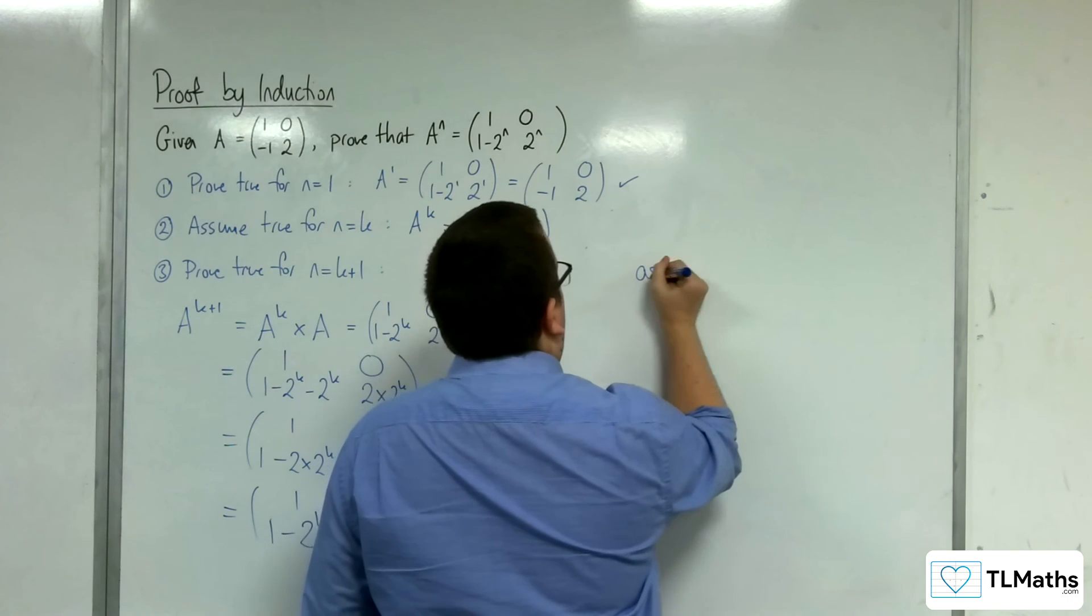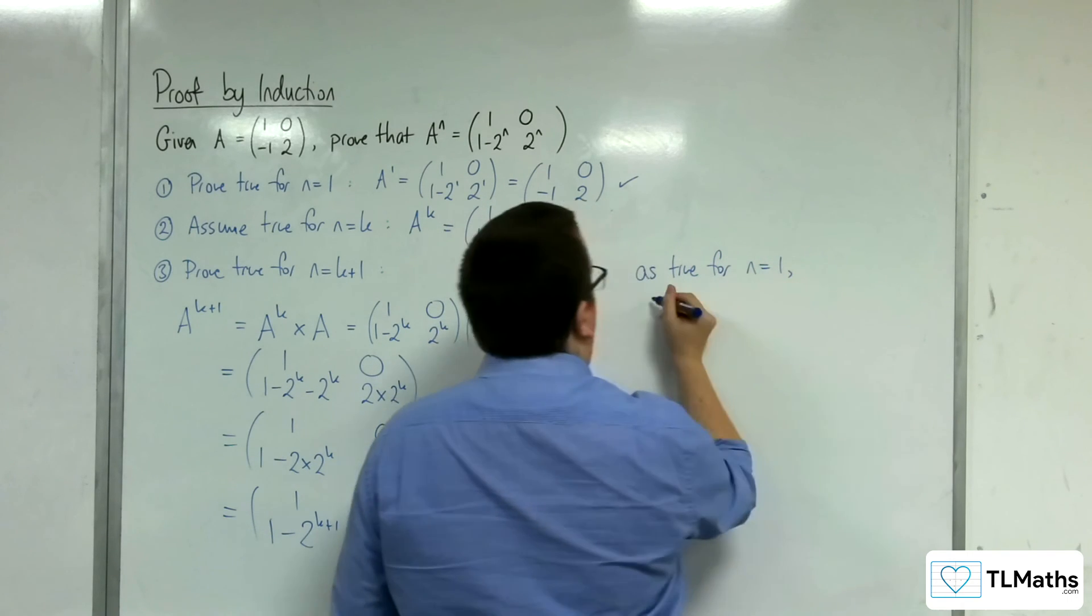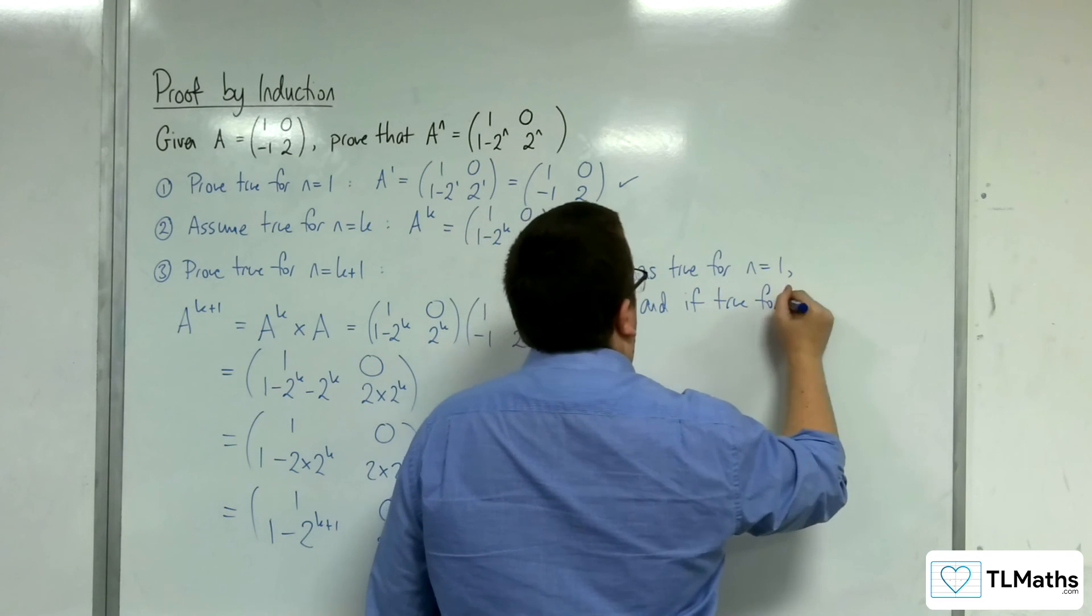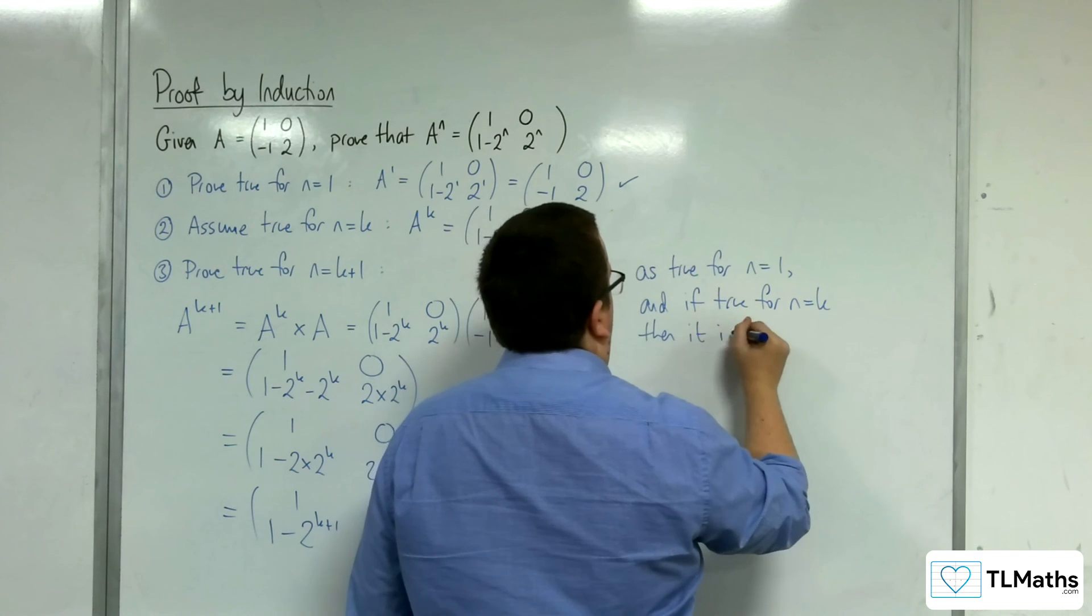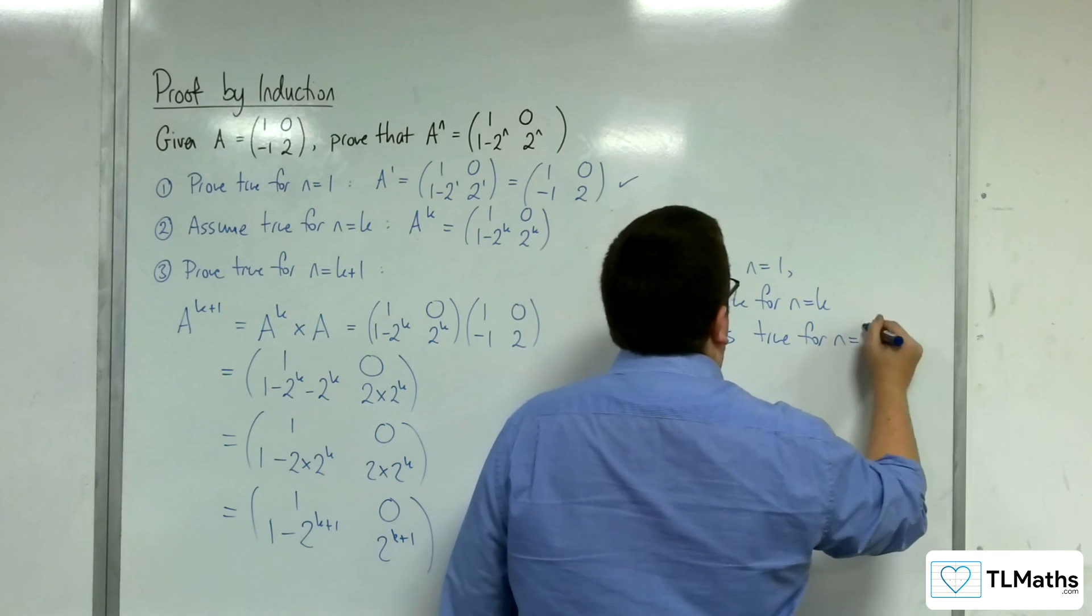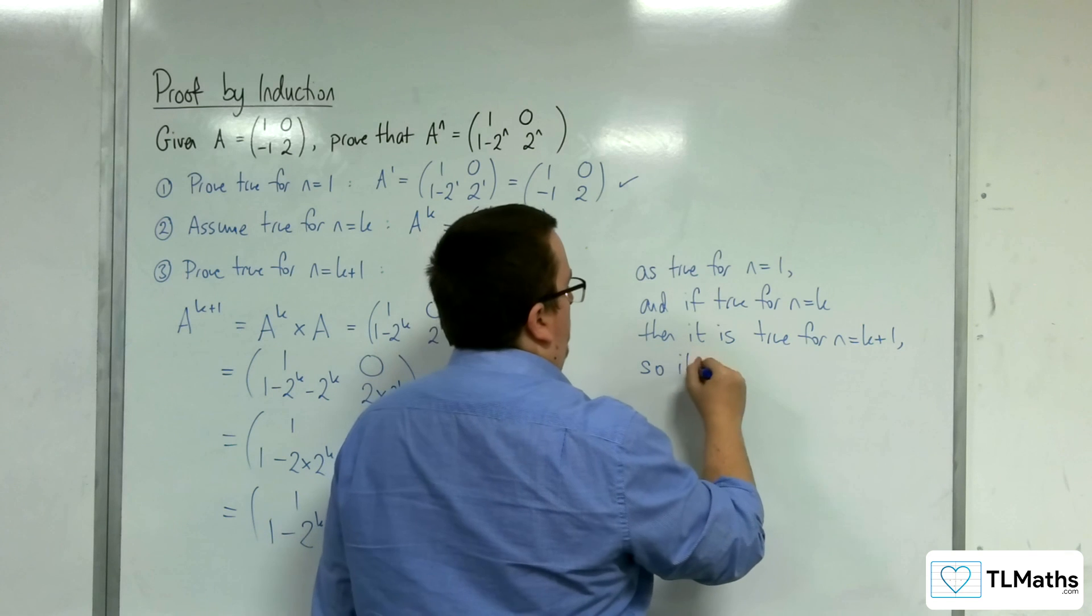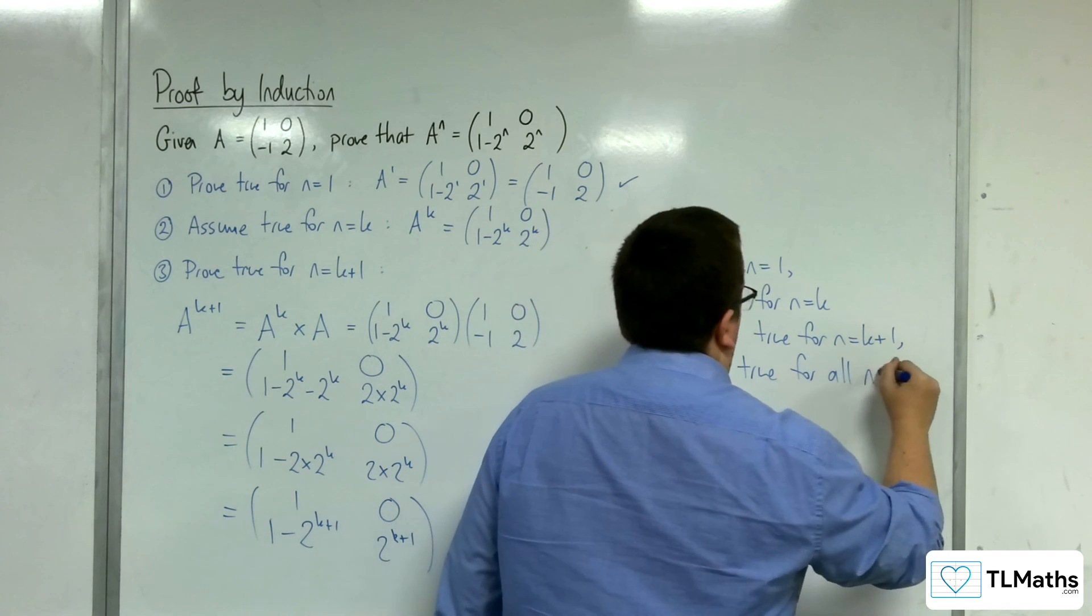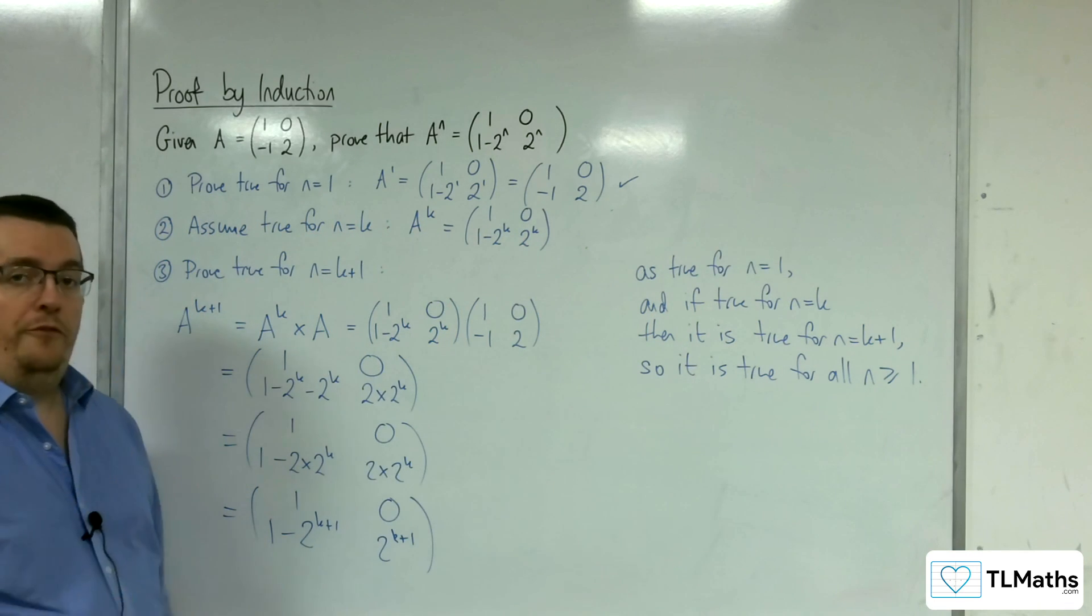Since it was true for n equals 1, and if true for n equals k then it is true for n equals k plus 1, it is true for all n greater than or equal to 1. And that is our proof.